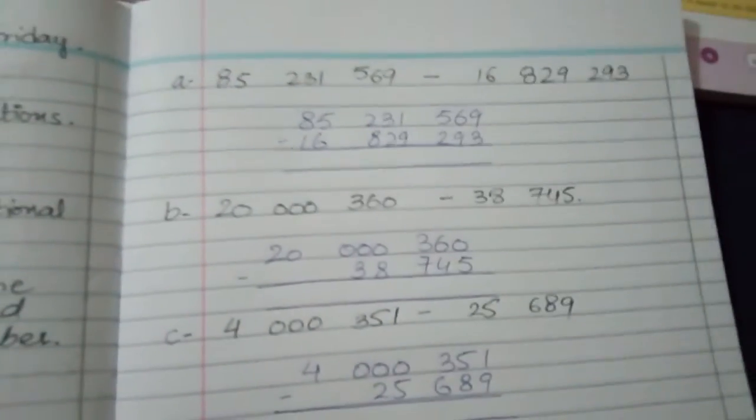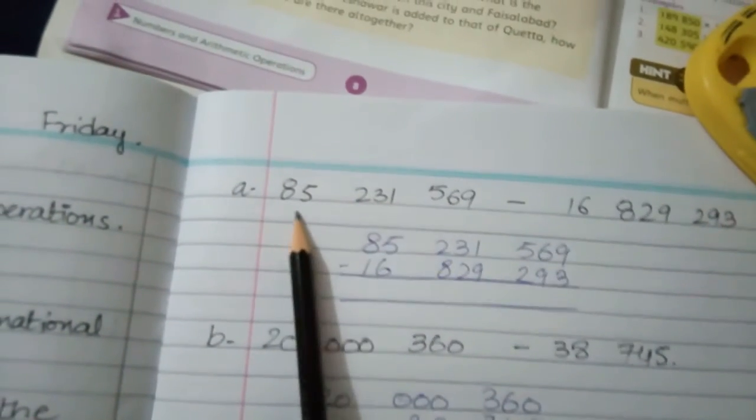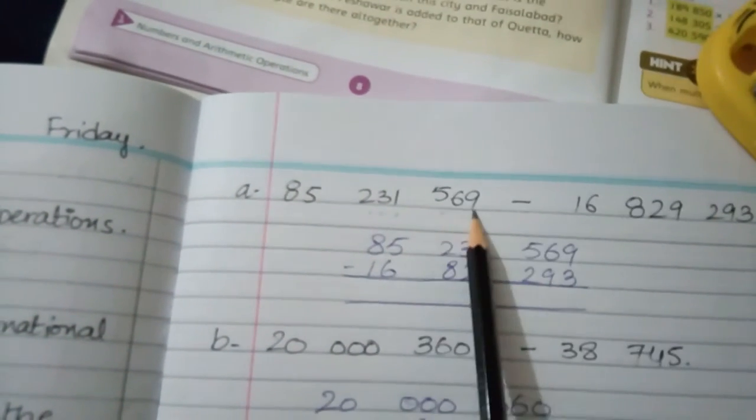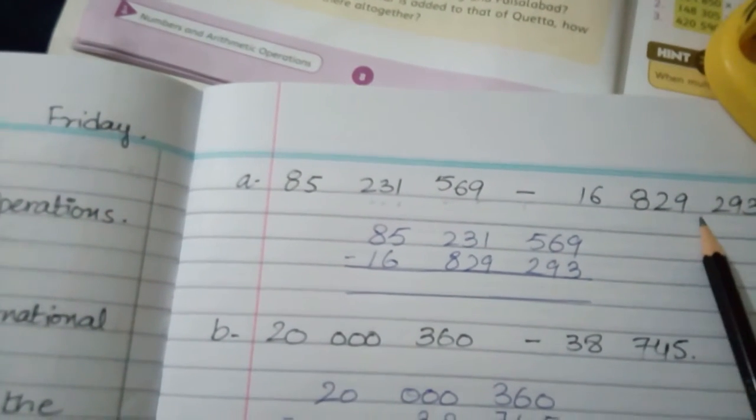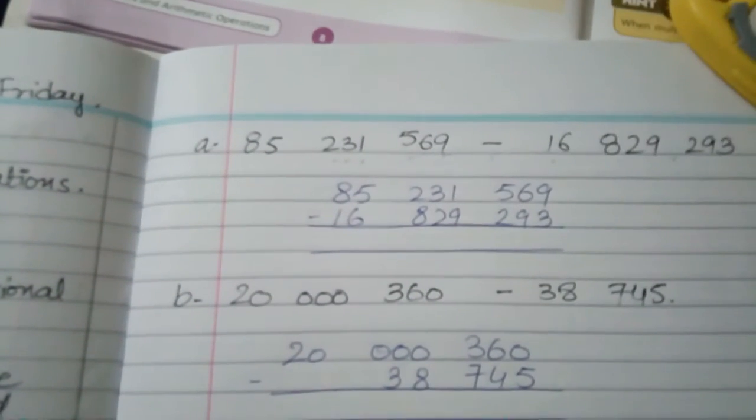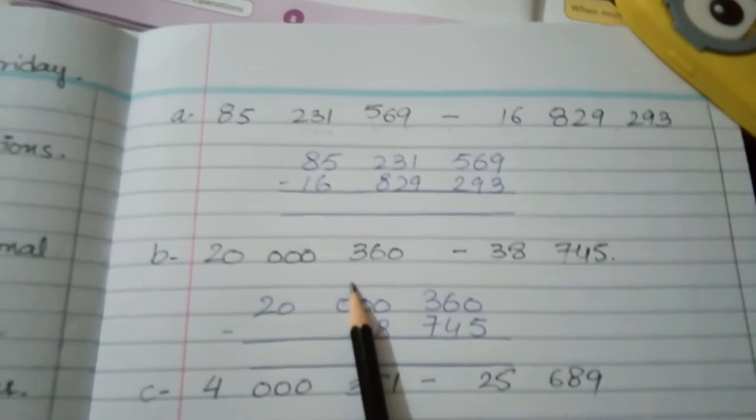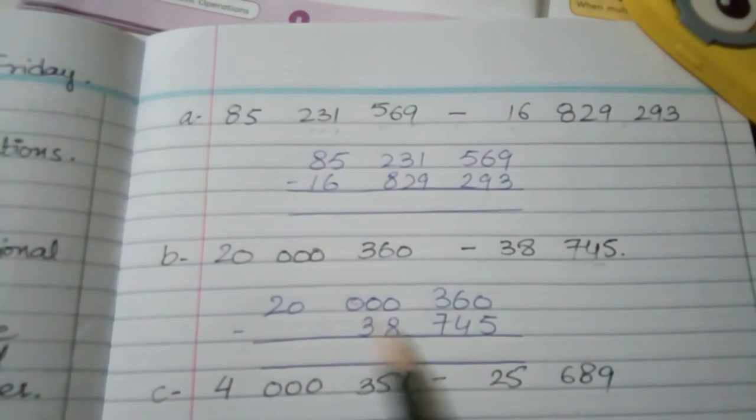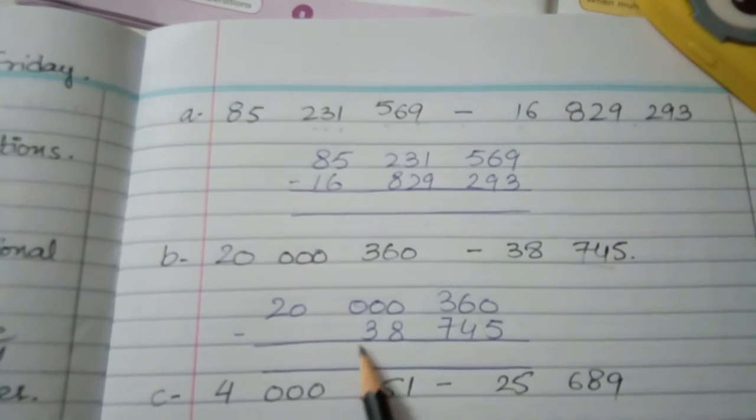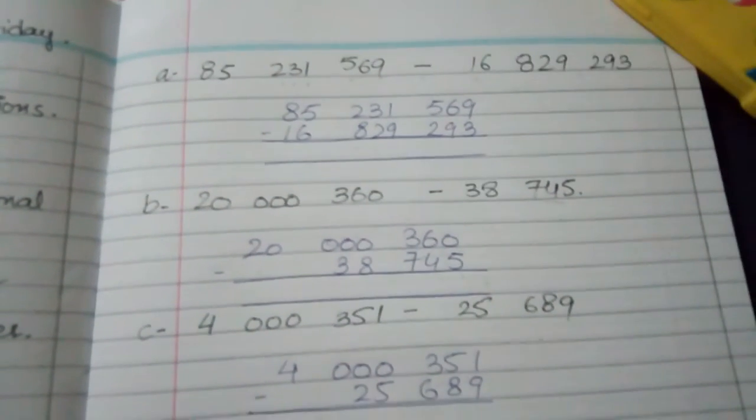Write in vertical form and then subtract. Now you have to write questions simply from the book. You will write the question, then you will write the sum of these two parts: 20 million 360 minus 38,745. Then you will solve this by doing the subtraction.